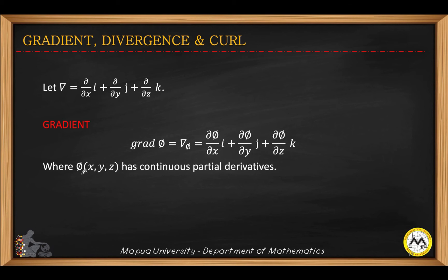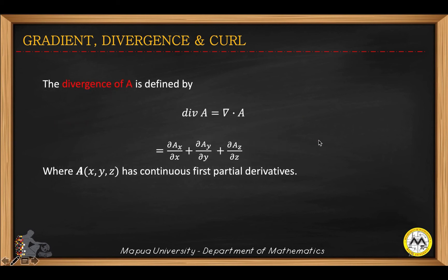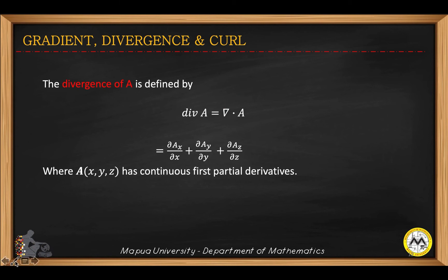Given a function that has continuous partial derivatives, the gradient is obtained by taking the first partial derivatives with respect to x, with respect to y, and with respect to z. For the divergence, that is applying the dot product between the del operator and vector a, so this is actually a vector.